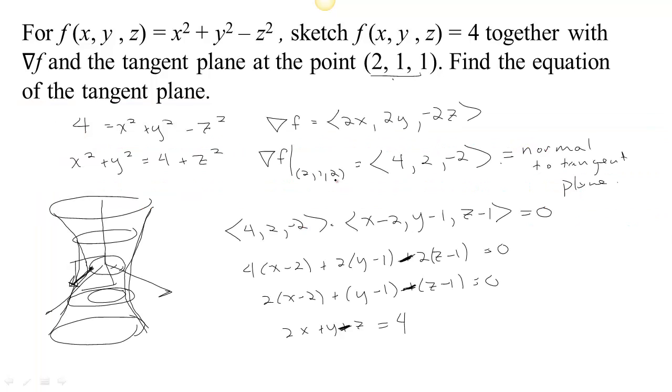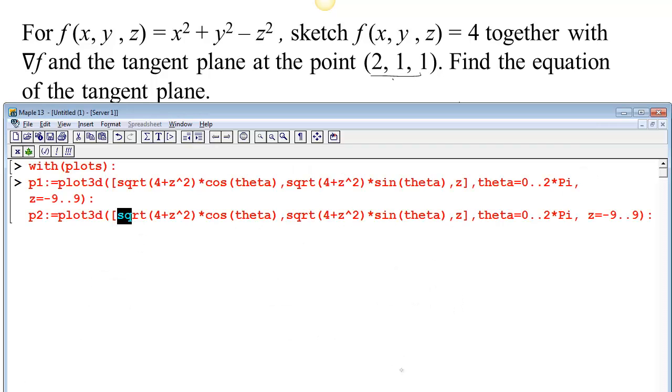Our plane says that if we solve for z here, z is going to be 2x + y - 4. So let's go ahead and, rather than parametrize it, we'll just say z = 2x + y - 4. And then we'll just make sure that we're in a range around our x value of 2. So let's let x go from 1 to 3. And we had a y value of 1, so we can let y go from 0 to 2.